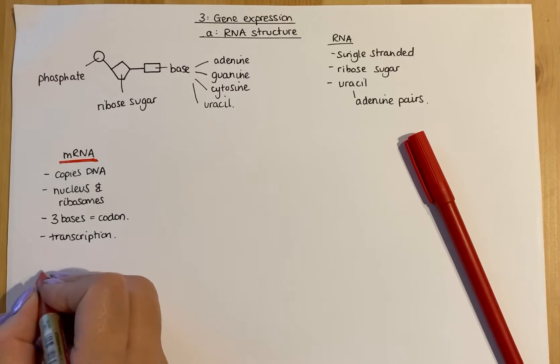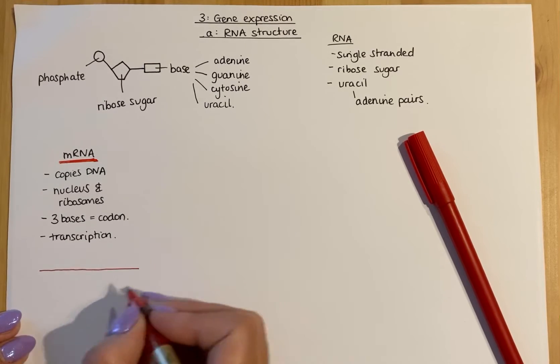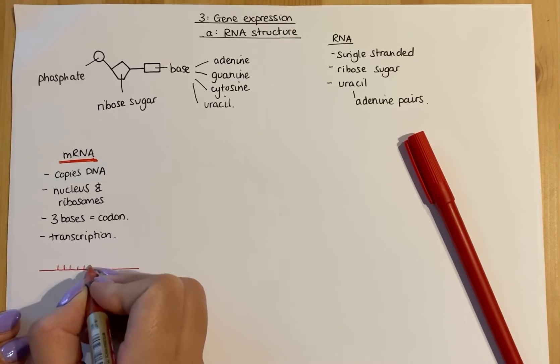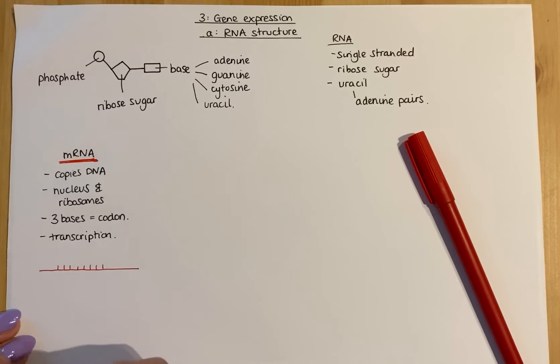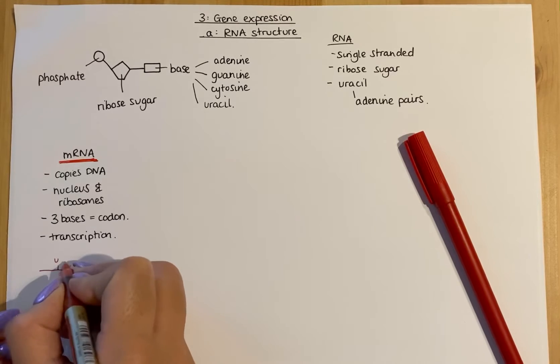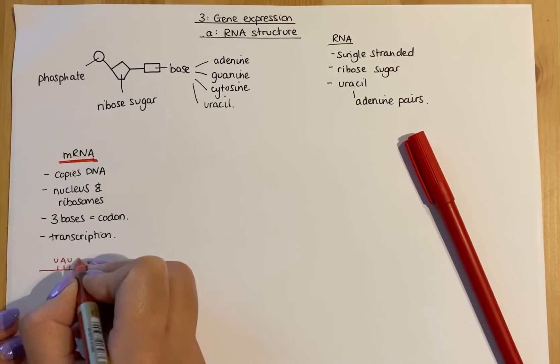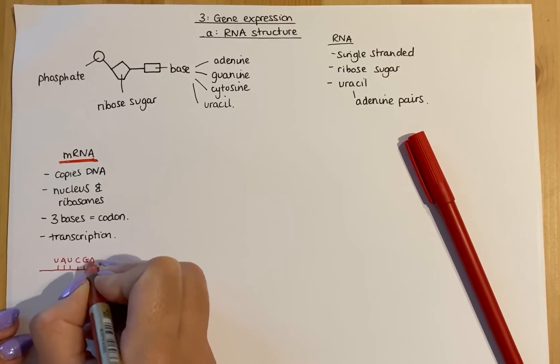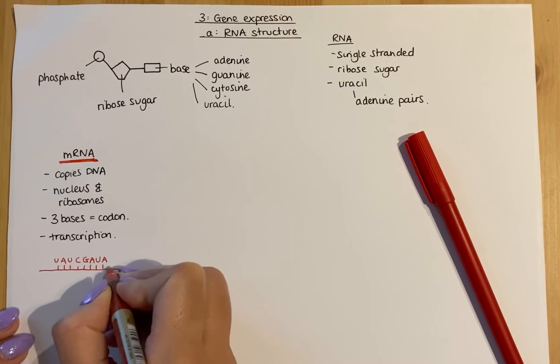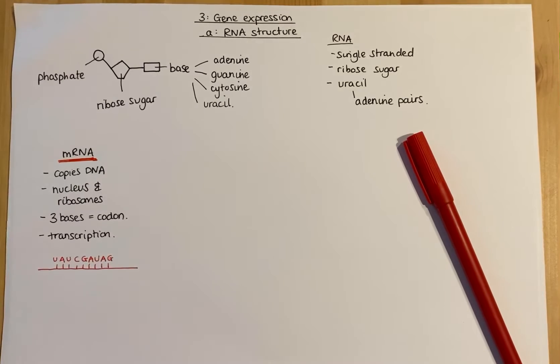In terms of what mRNA looks like, it would normally be shown as one single long strand with bases along it. As an example, we'll have UAU, CGAUA, and then G. Notice there are no T's - no thymine - because uracil is the base found in RNA. At no point will you find a T base in any of these RNAs.